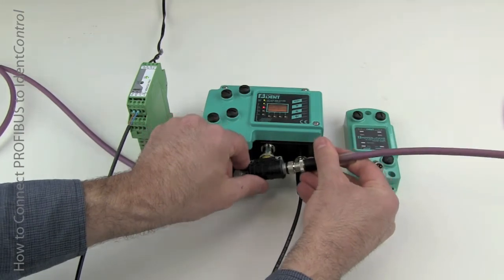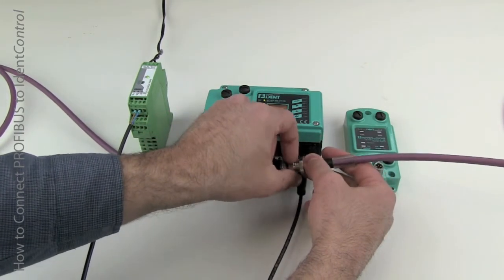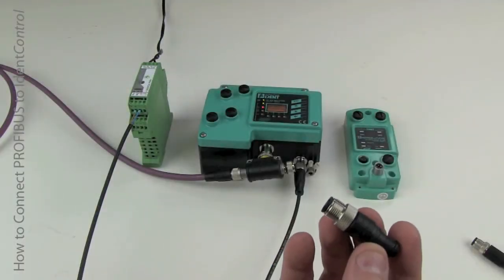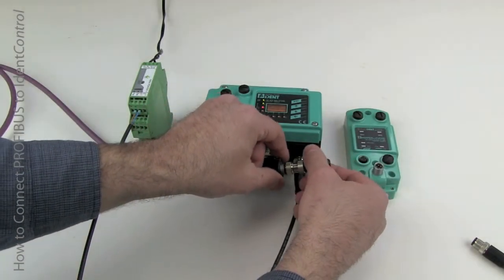If, for some reason, this is the last node of the network, you would, of course, not have the Profibus out connection. Replace that with a termination resistor that you can, in this case, connect directly to the T.